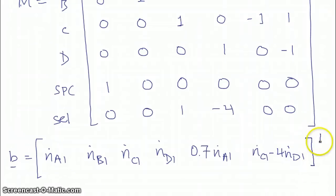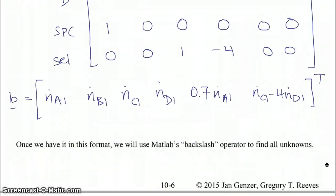So that's our vector, and I'm going to put this little T here for transpose to show that it's supposed to be a column vector. Now once we have the matrix and the vector of knowns in this format, we can use MATLAB's backslash operator to find all unknowns. So to see how that works, let's look over at MATLAB and the script that I've written.